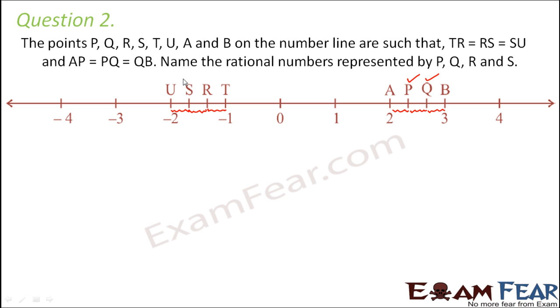This is P, this is Q and this is S. So we have to tell what is that exact rational number represented by these. So let us first focus on P, Q. So here very clearly we can see that P and Q, they lie between A and B. So that means both P and Q, they lie between 2 and 3.